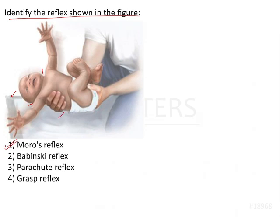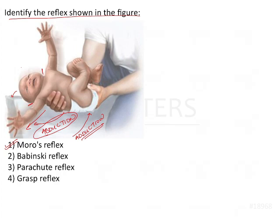Abduction is when you move the arms away from the body, whereas adduction is when the arms move towards the body. In the Moro's reflex, we see abduction of the arms and extension of the arms. So to summarize, the key identifiers are: neck is unsupported, abduction of the arms, and extension of the arms.